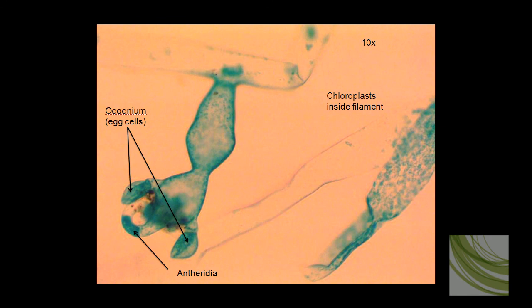Here is that same spot using our 10X objective, and we've zoomed in a little closer. We can see some chloroplasts inside the filament over here, and this reproductive structure — we can see the antheridia and some egg cells on either side.